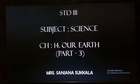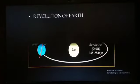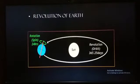Part 3, Chapter 14: Our Earth. Now we will begin with the revolution of the earth. The movement of the earth around the sun in a fixed path is called a revolution.